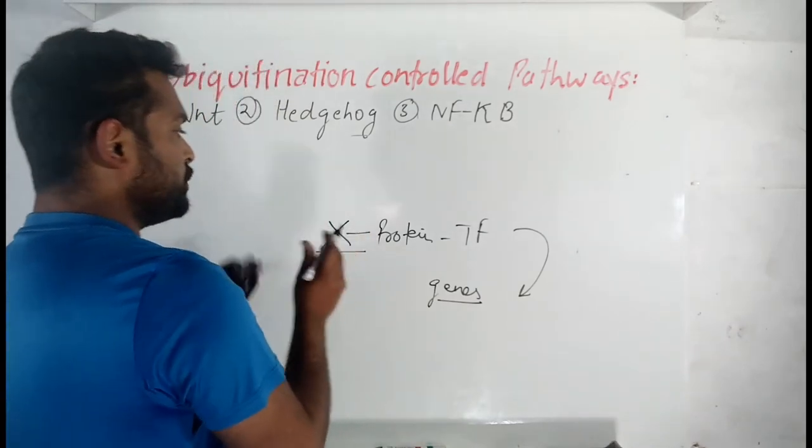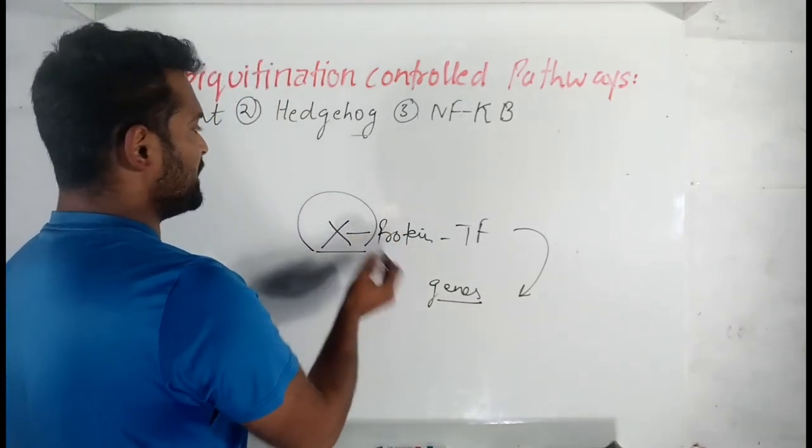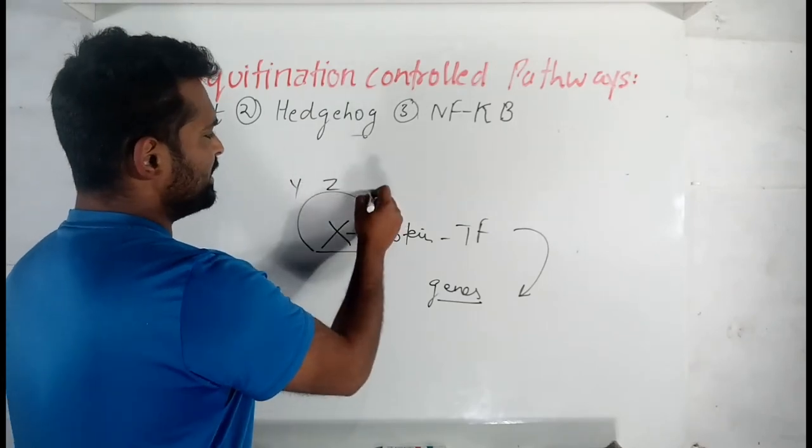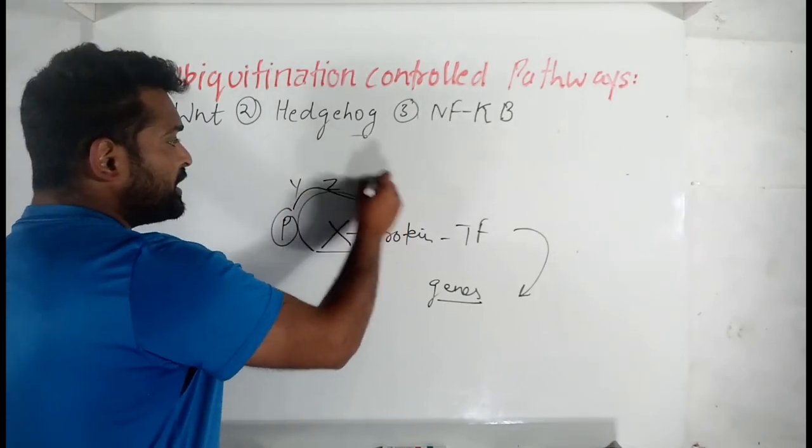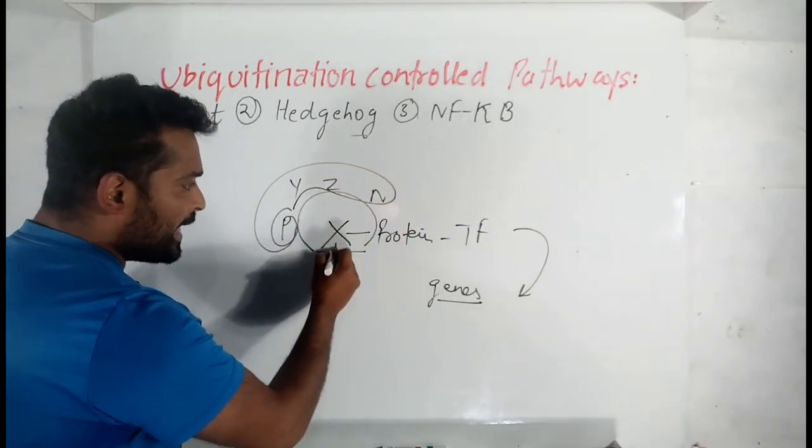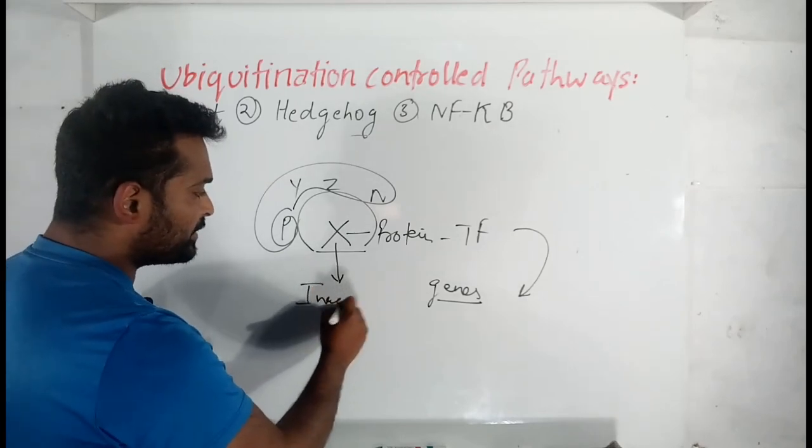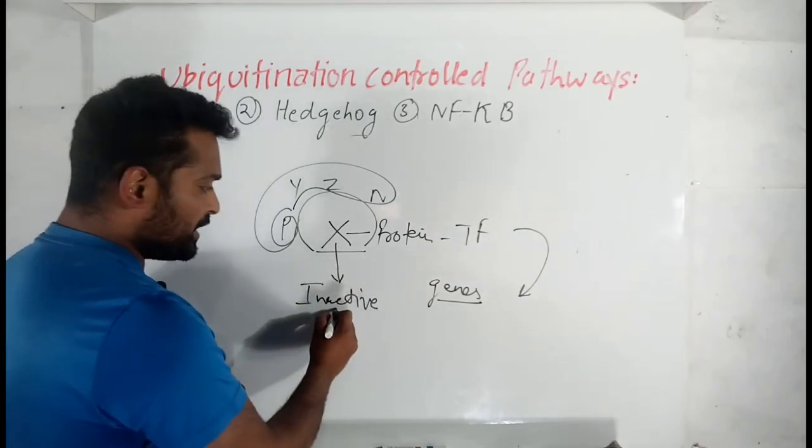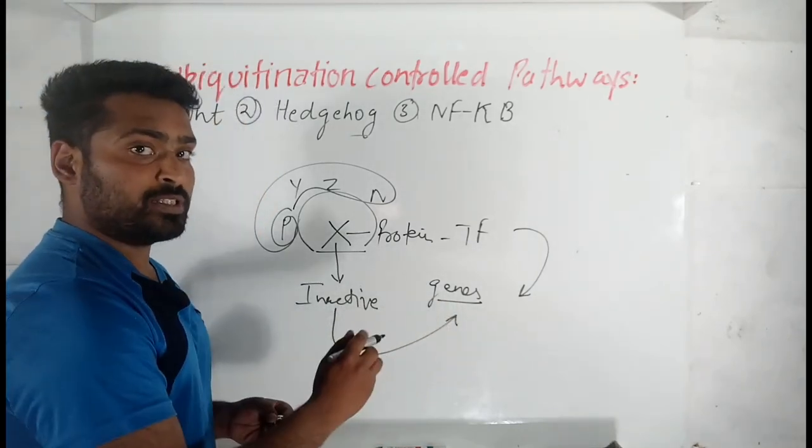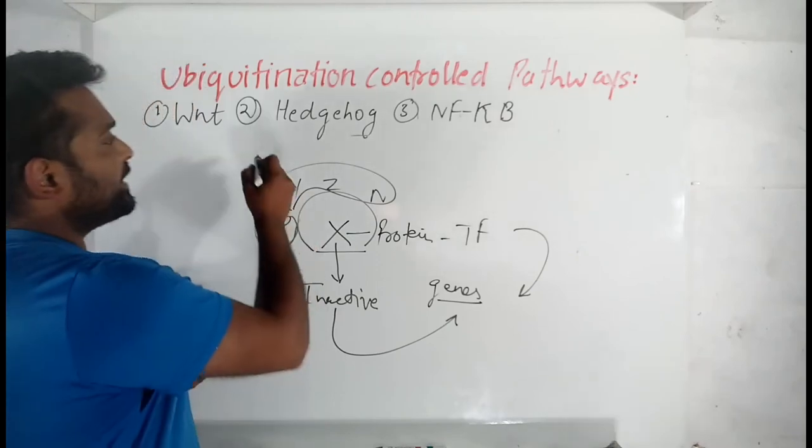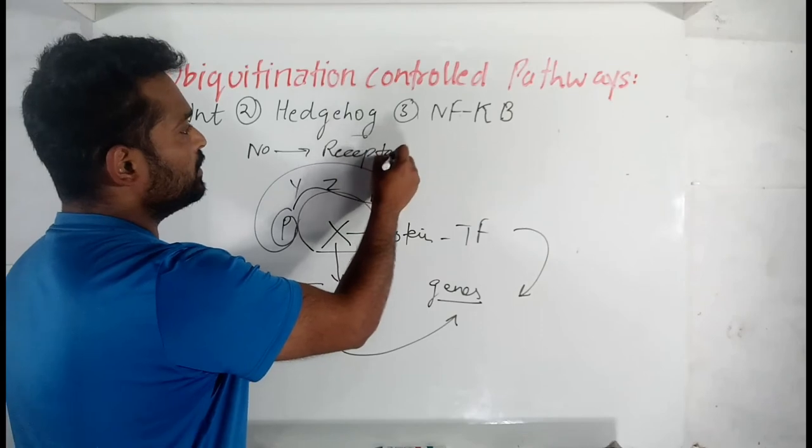This X protein is surrounded by a bunch of protein or we can say a complex of protein named as YZNP, whatever you name them. Now this complex of protein is what making this X protein inactive or rendering it inactive. Now this protein is not able to go into the nucleus and initiate the transcription of the genes. This is when there is no ligand bound to the receptor.